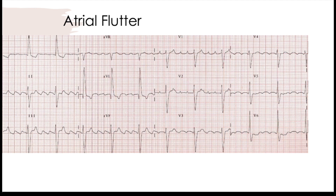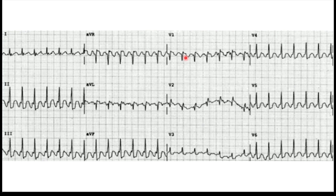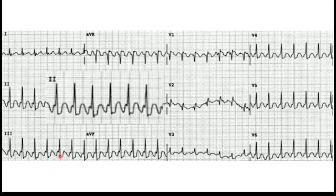The number one cause of false activation at the cath lab I work is atrial flutter. Remember, 2, 3, and AVF are going to have your inferior leads and they'll have that typical sawtooth pattern. V1 is going to have your upright P waves. So why do these become false activations? When you look at this EKG, it just doesn't look right. Where your flutter waves — your F waves — fall, the ones not being conducted down to the ventricles, they can land anywhere near that QRS. When they land near that ST segment, they can give the appearance of ST depression or ST elevation.